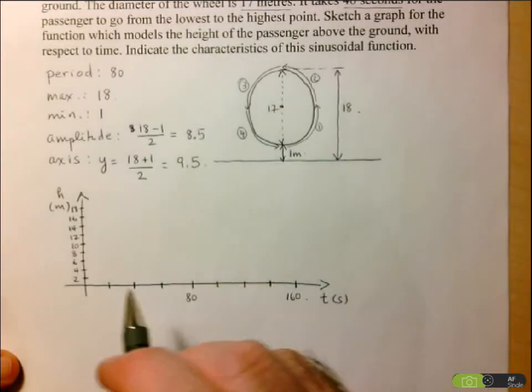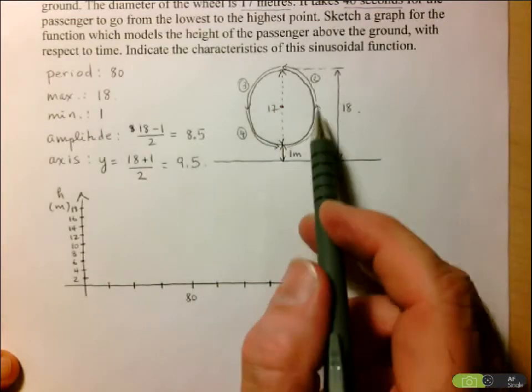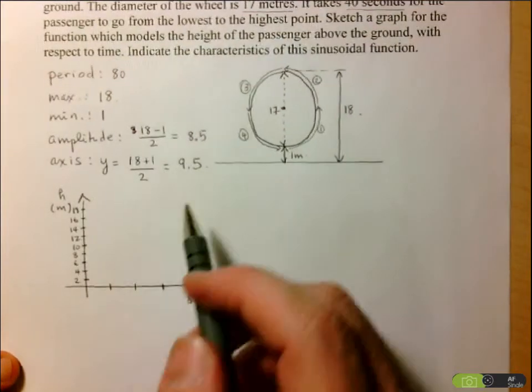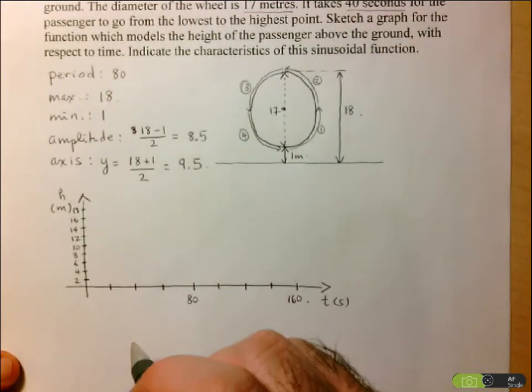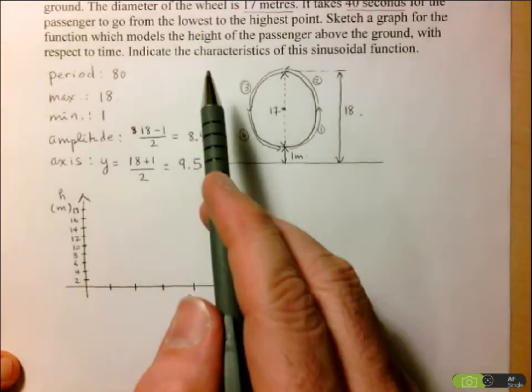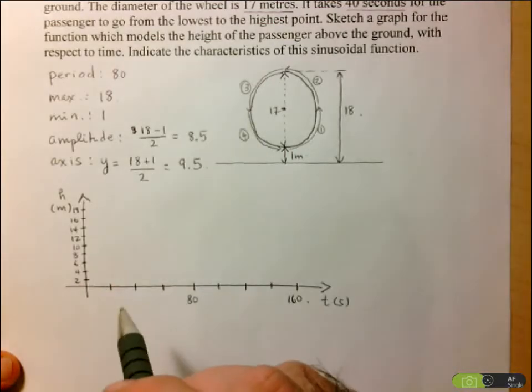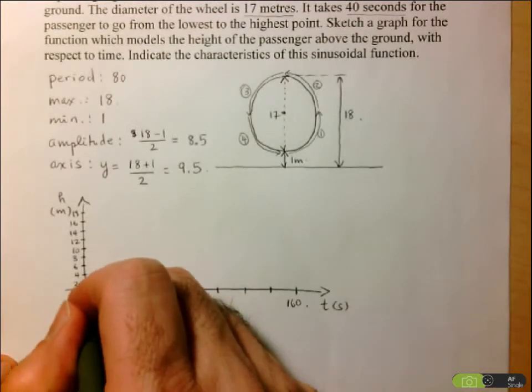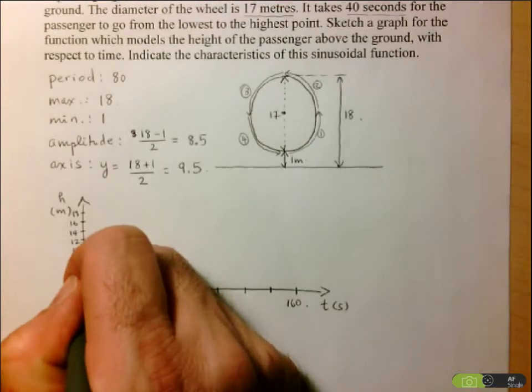And now what I'm going to do is start plotting these four points for every period. Now it didn't tell me where to start my graph, but I would say it makes sense to start at the lowest point, since that's the place where the person gets on the ride. So at the beginning, at time equals zero, I'm one meter off the ground. So there's my first point.